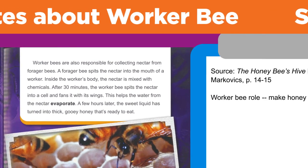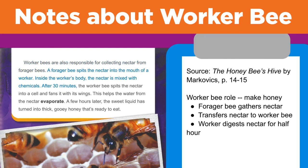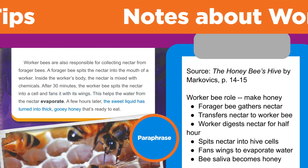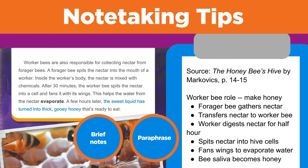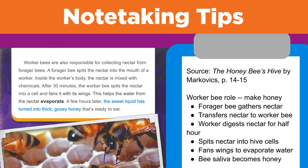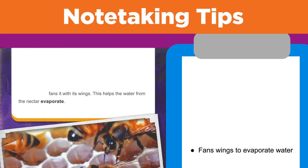So what notes would you take from this passage? Some possible notes might be: forager bee gathers nectar; transfers nectar to worker bee; worker digests nectar for half hour; spits nectar into hive cells; fans wings to evaporate water; bee saliva becomes honey. Notice that the student paraphrased the original source by writing down the ideas in her own words instead of using the author's exact words. Her notes are brief — she used phrases instead of complete sentences and omitted unimportant words. For example, the book said 'fans it with its wings — this helps the water from the nectar evaporate,' and she wrote 'fans wings to evaporate water.'